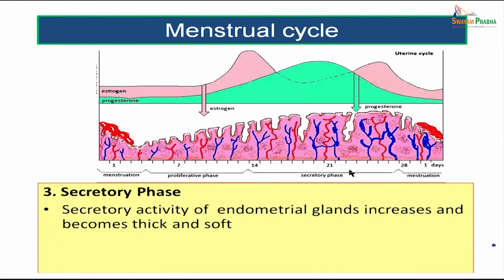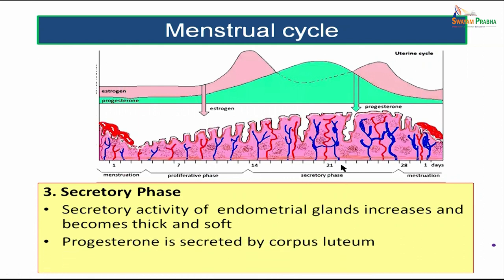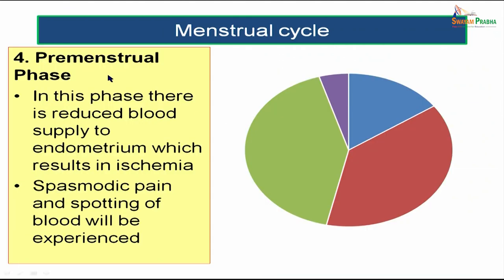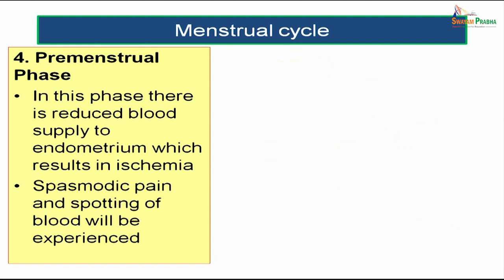In the secretory phase (days 15–25), progesterone from the corpus luteum drives increased secretory activity of the endometrial glands, making the layer thick and soft, and further coiling of the spiral arteries. In the premenstrual phase (days 26–28), there is reduced blood supply to the endometrium, spasmodic pain, and spotting of blood, followed by the onset of menstrual flow.